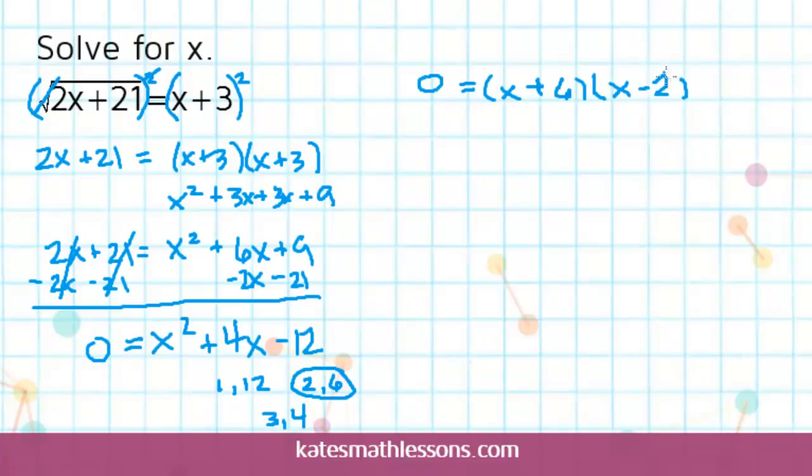So if I have two factors here and I know they multiply to zero, that means either the first one, the x plus 6, that one has to be equal to zero, or the second one, the x minus 2, that one has to be equal to zero.